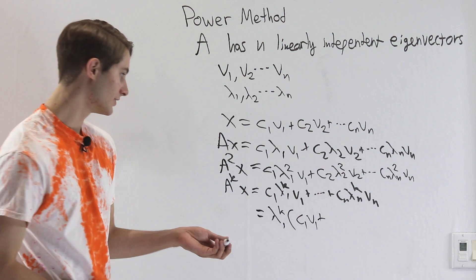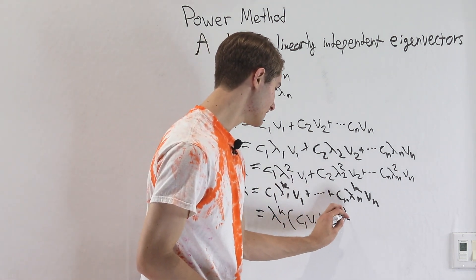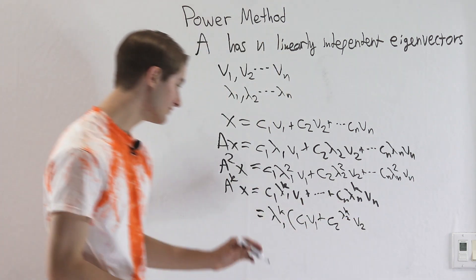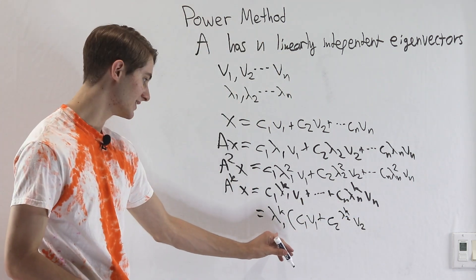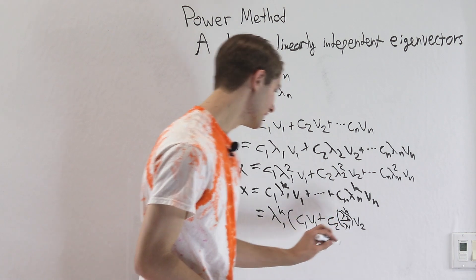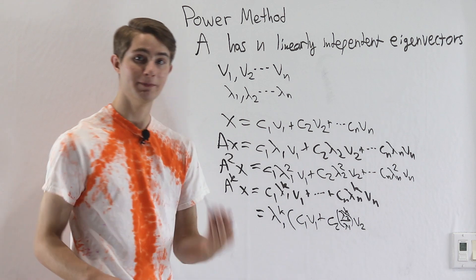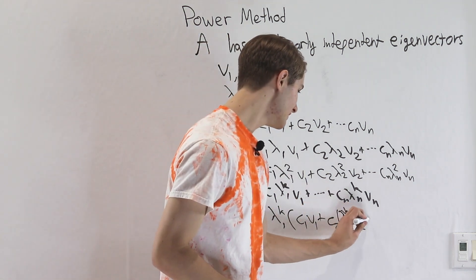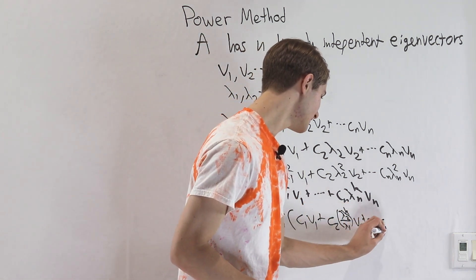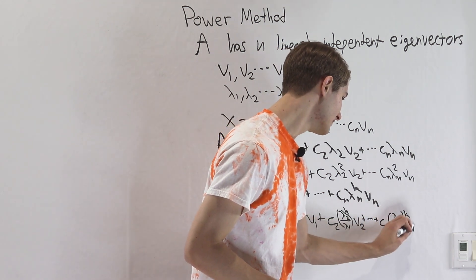If we look at this second term, well that was c2 and then we had lambda 2 to the k v2, but we factored out lambda 1 to the k, so we're actually going to have lambda 2 over lambda 1 to the k, and this way when we multiply by lambda 1 to the k, we get back what we started with. And this continues until we have cn lambda n over lambda 1 to the k vn.